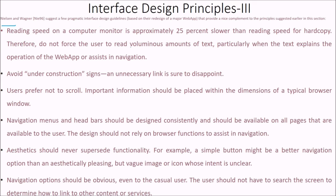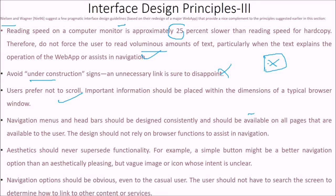Nielsen and Wagner suggested pragmatic interface design guidelines. Reading speed on a computer monitor is approximately 25 percent lower than reading speed on hard copy, so do not force users to read bulky text, particularly when the text explains operations or assists navigation. Avoid 'under construction' pages, as they disappoint users. Users prefer not to scroll, so important information should be placed within the dimensions of the typical browser. Navigation menus and the header bar should be designed consistently and available on all pages. Aesthetics should never overpower functionality — a simple button might be a better navigation option than an aesthetically pleasing but vague image. Navigation options should be obvious so users do not have to search the screen to find links to other content.